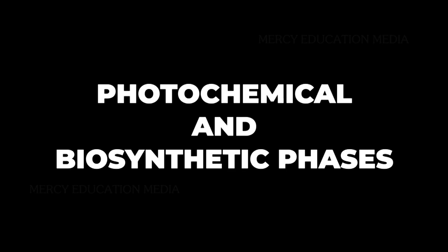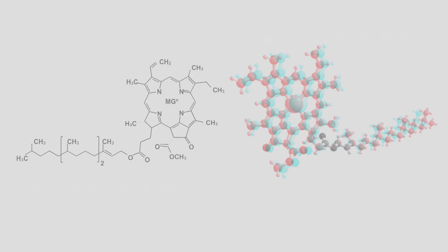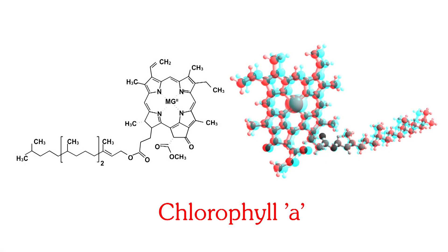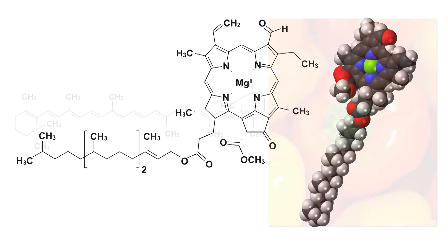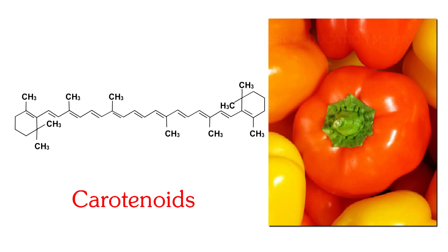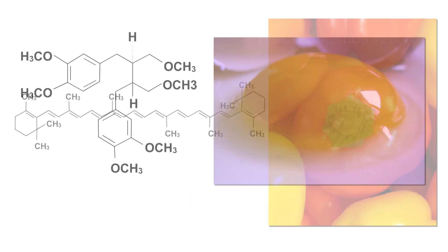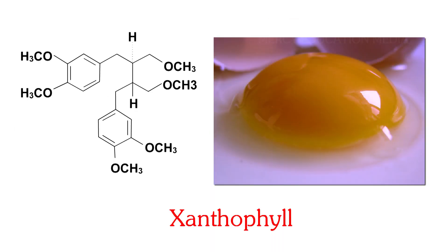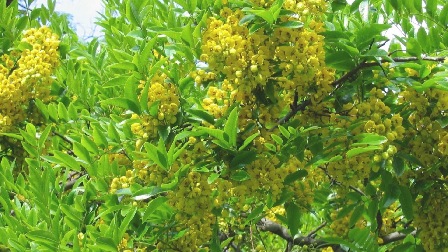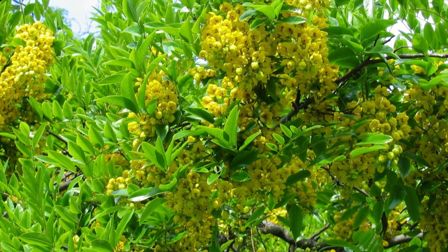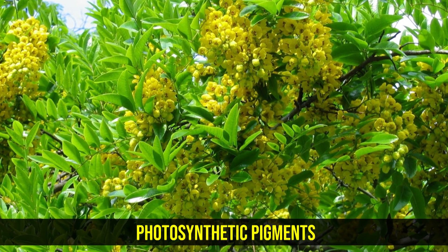Let us know about photochemical and biosynthetic phases. What are the photosynthetic pigments? Chlorophyll a, chlorophyll b, carotenoids, xanthophyll, and phycobillins. The pigments involved in photosynthesis are called photosynthetic pigments.